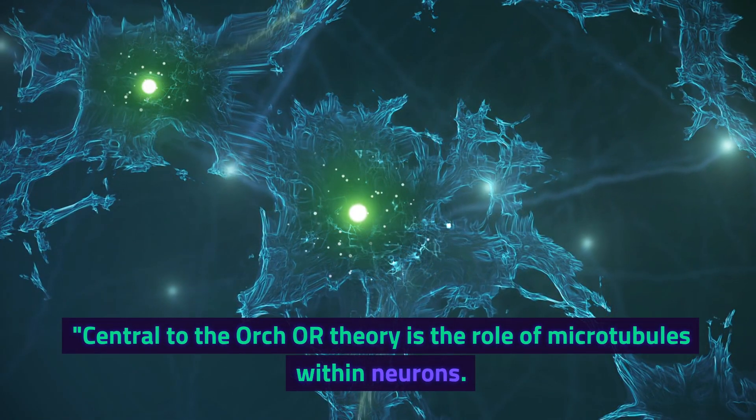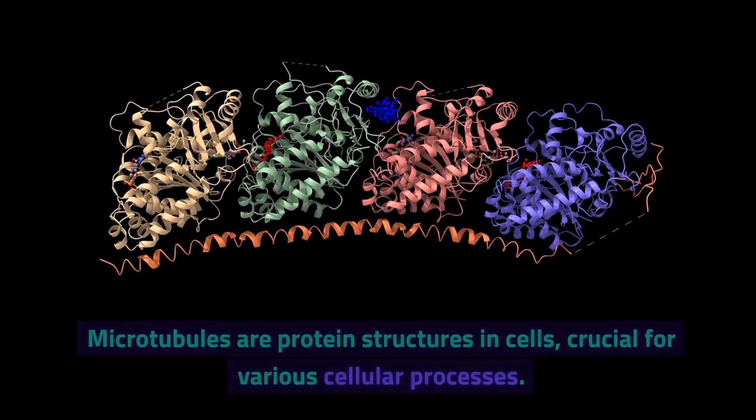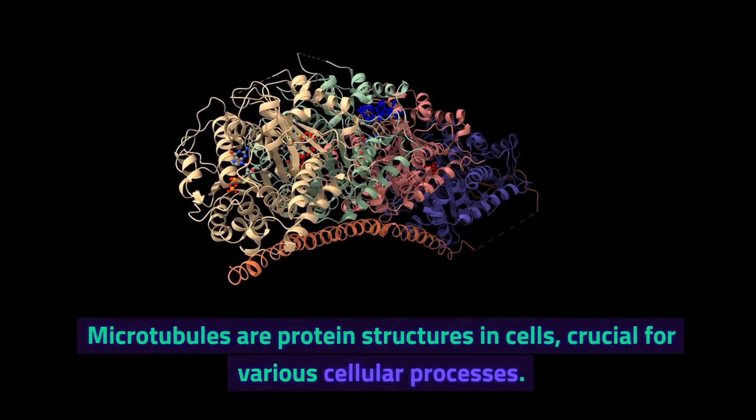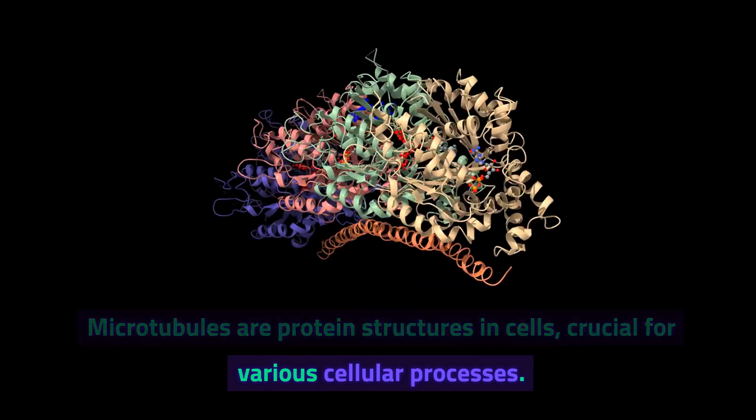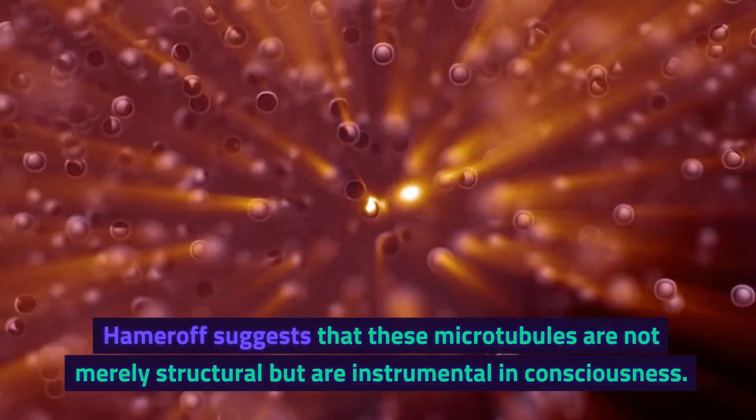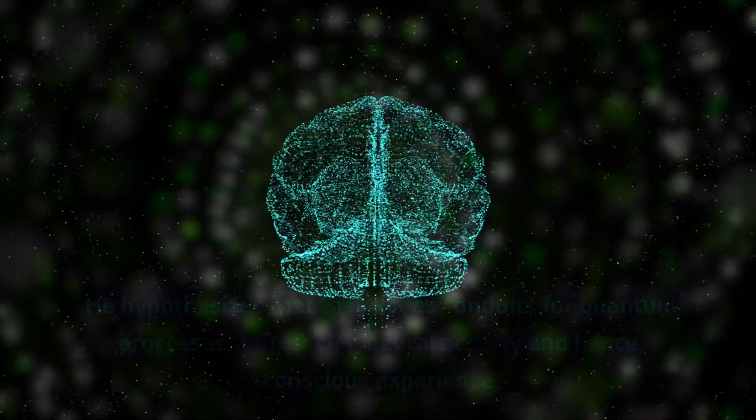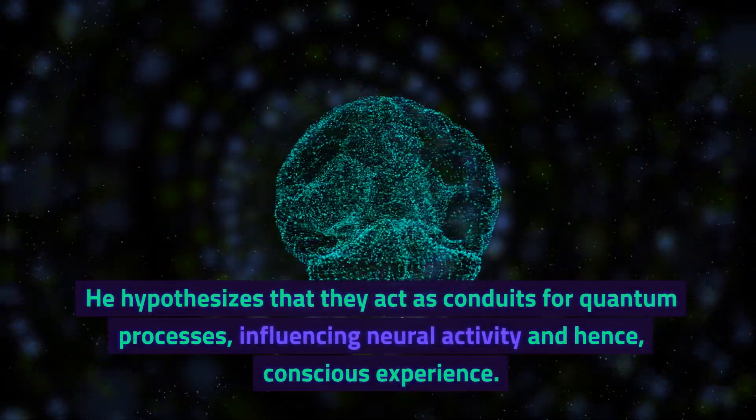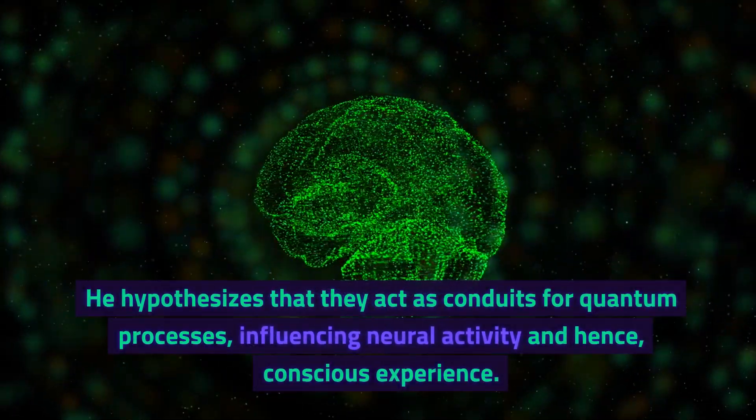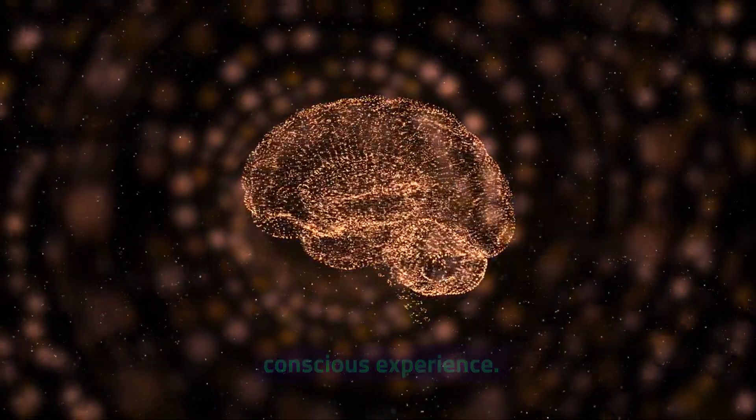Central to the Orch OR theory is the role of microtubules within neurons. Microtubules are protein structures in cells, crucial for various cellular processes. Hameroff suggests that these microtubules are not merely structural but are instrumental in consciousness. He hypothesizes that they act as conduits for quantum processes, influencing neural activity and hence conscious experience.